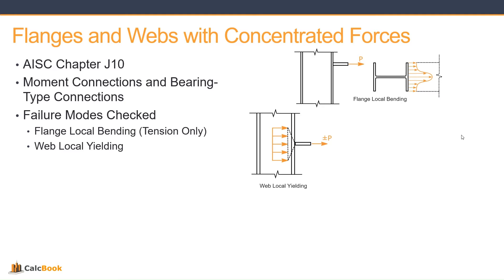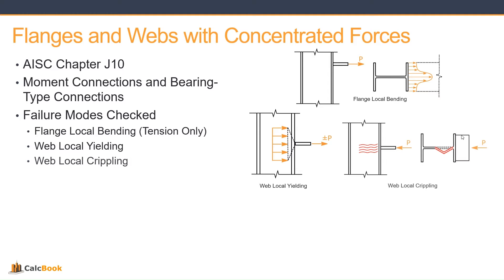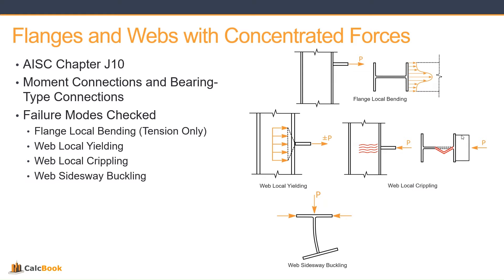Then we have web local yielding, which can be compression or tension caused by the top or bottom flange of the beam. We have web local crippling, which is going to be a compressive force into the column. We have web side sway buckling, which actually comes from a bearing type connection — not a moment connection, but more a plate or something like that bolted to a flange and pushing compression on it.